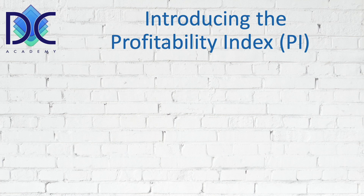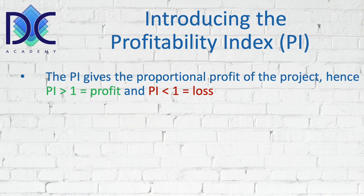NPV is very important and is one of the parameters we must consider when dealing with projects. An NPV larger than zero is an indication that our project is a good investment. Let's now introduce another parameter that relates to the NPV: the Profitability Index (PI). The PI tells us whether a project is profitable or not. When the PI is larger than one, we have a profit; when it is smaller than one, we have a loss.